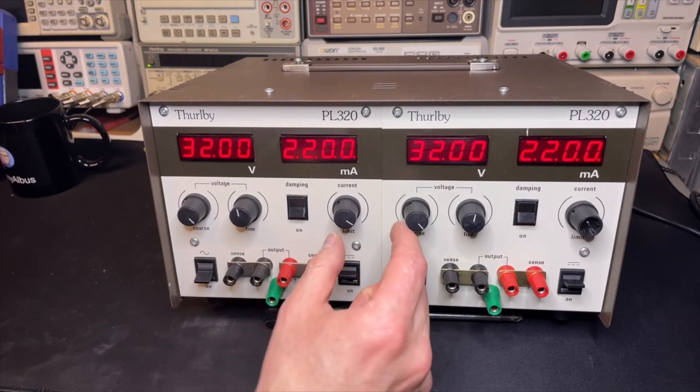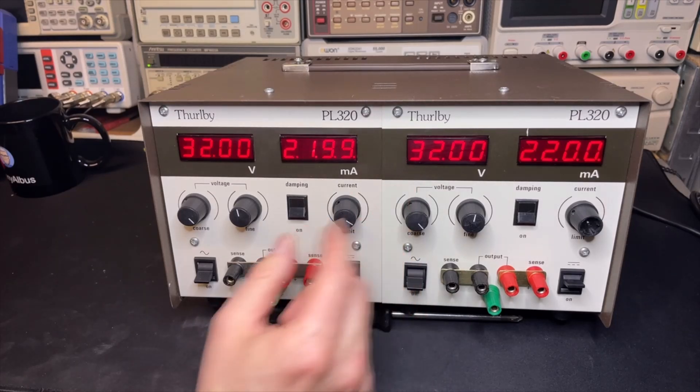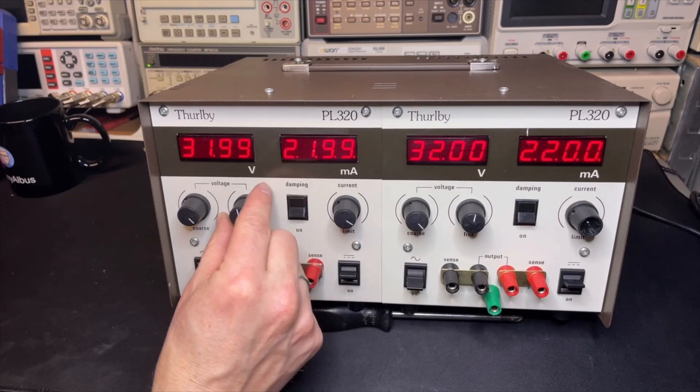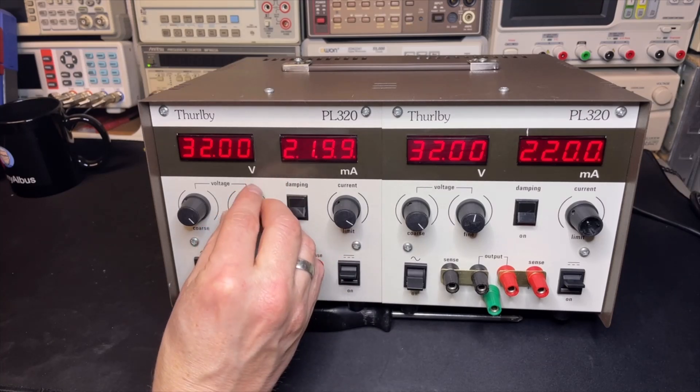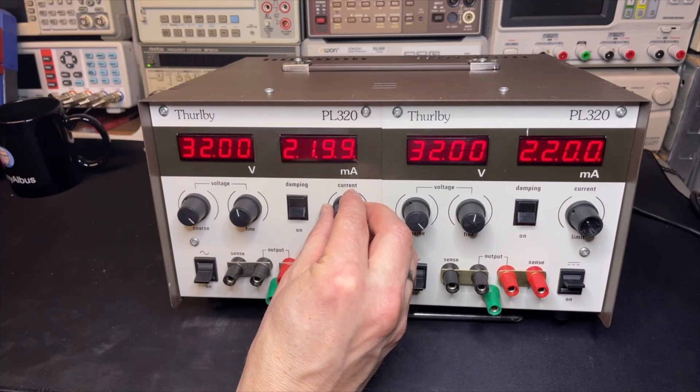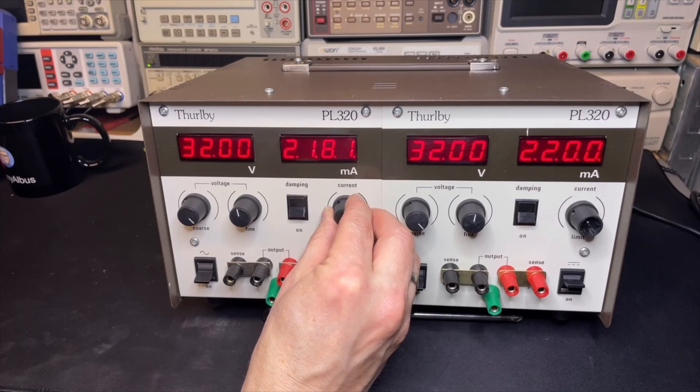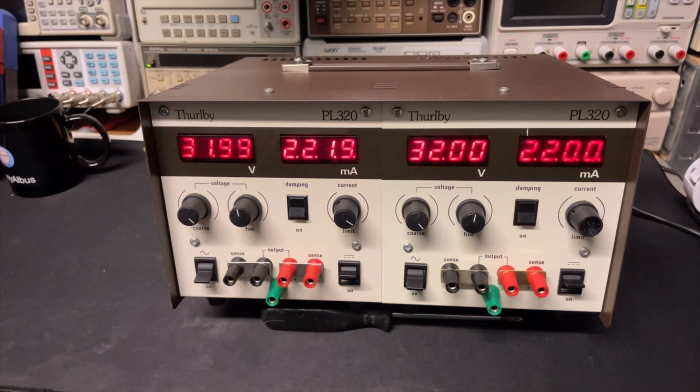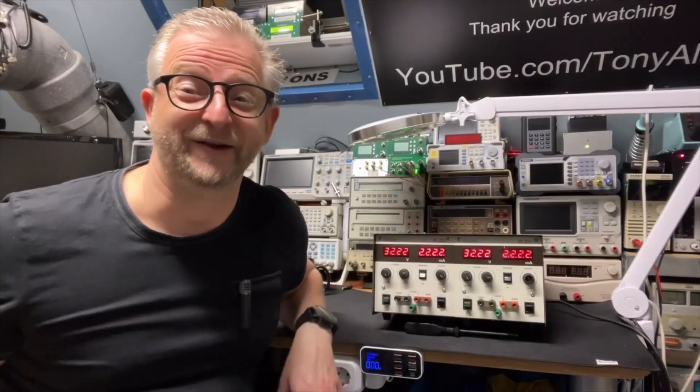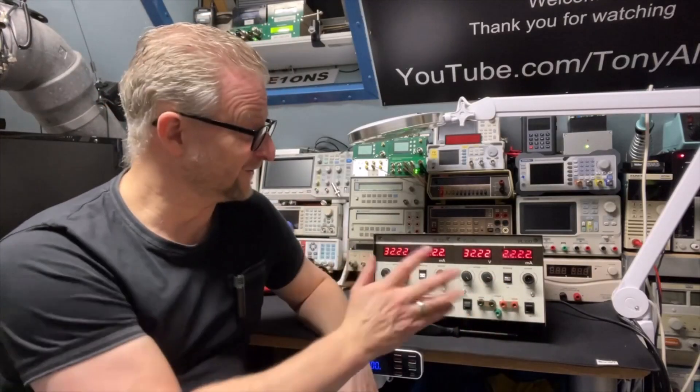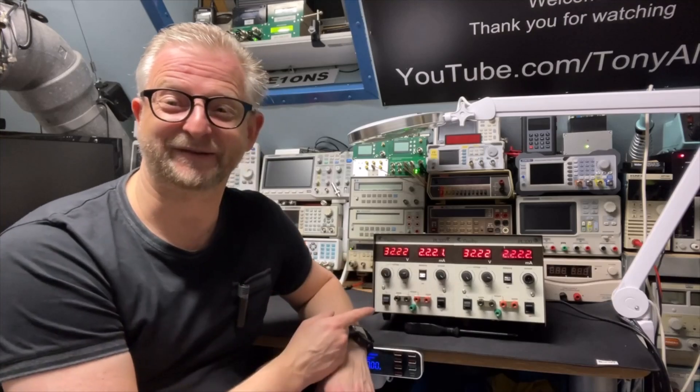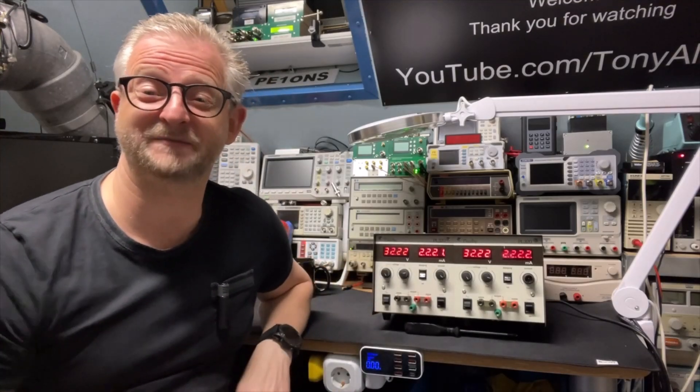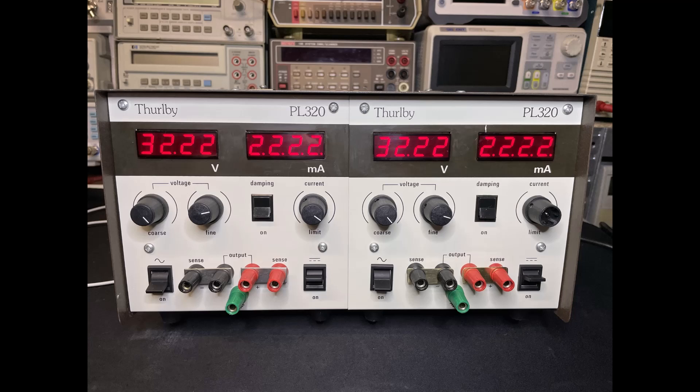It can do 32 volts, 2.2 amps, sometimes a fraction more, but it's very bright. If I switch off, look how visible the display is. It's still very bright. I think it's a nice result. So that's it. The Thurlby, all clean, all adjusted, ready for use. Thank you for watching and I hope to see you next time.